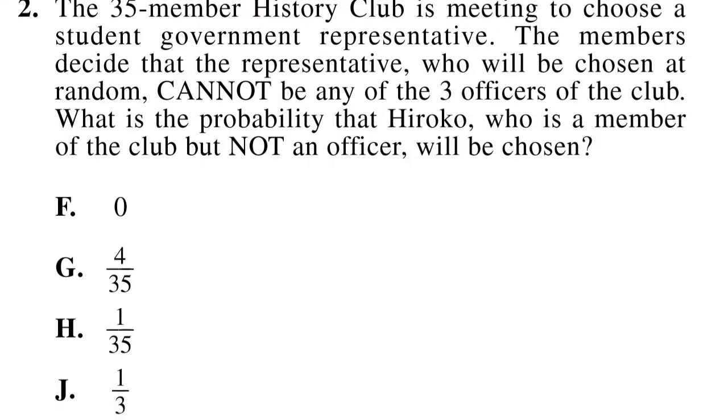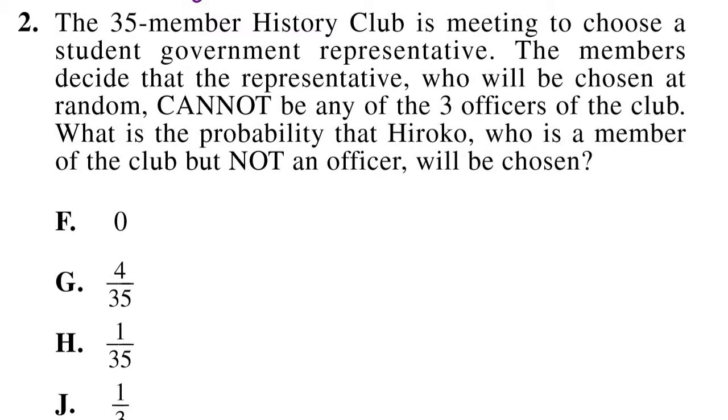Moving on to number 2. The 35 member history club is meeting to choose a student government representative. The members decide that the representative, who will be chosen at random, cannot be any of the 3 officers of the club. What is the probability that Hiroko, who is a member of the club, but not an officer, will be chosen?